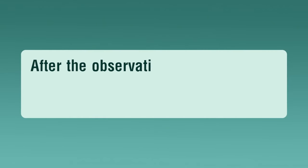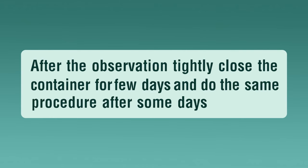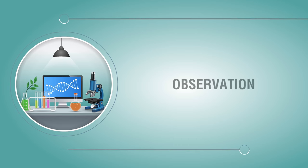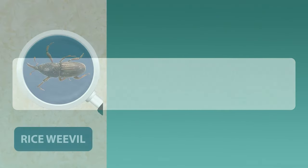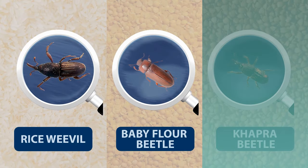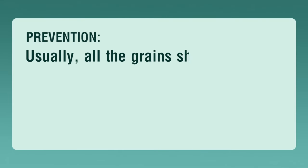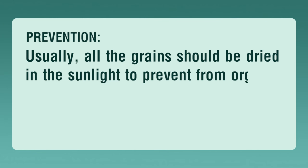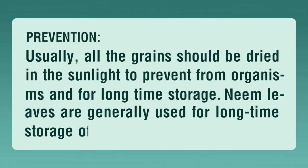After observation, tightly close the containers for a few days and repeat the same procedure after some days. Observation: We observed that the food was spoiled by insects such as rice weevil, baby flower beetle, and khabra beetle. These insects are responsible for spoiling the food grains. Usually all grains should be dried in sunlight to prevent spoilage by organisms, and for long-term storage, neem leaves are generally used at home.